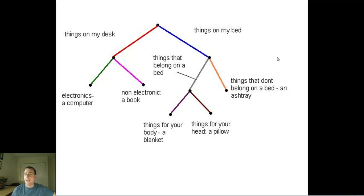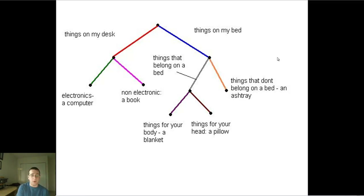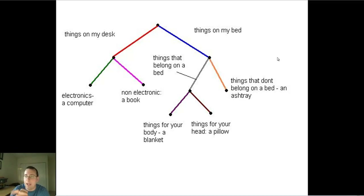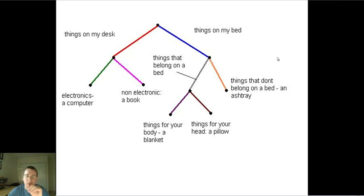If you went to the things on my desk, you split them into electronics or non-electronics. The electronics would be a computer, and the non-electronics would be a book. That is a way to classify all the things in life — we call this a dichotomous key, or two-way splits that help you organize your journey through the tree of life.